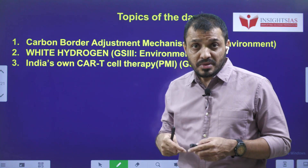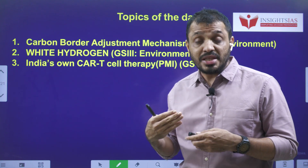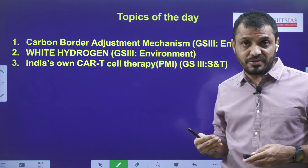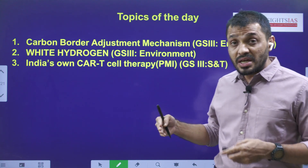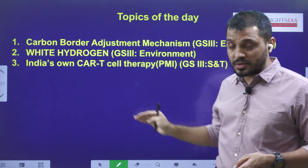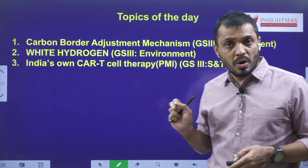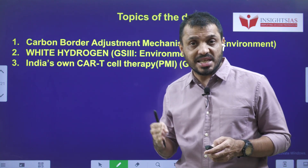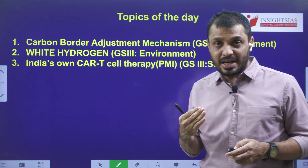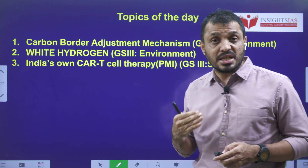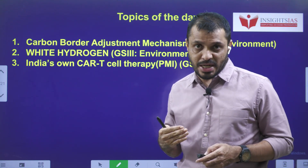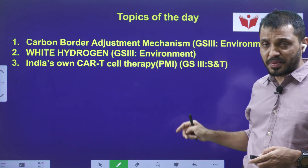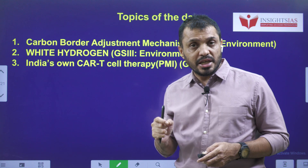The second topic is White Hydrogen. Scientists looking for fossil fuels in the northeast part of France discovered reservoirs of white hydrogen. We will discuss what white hydrogen is and the different types of hydrogen — gray, brown, black, blue — and the significance of white hydrogen.